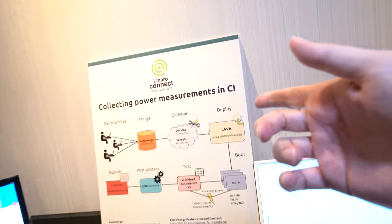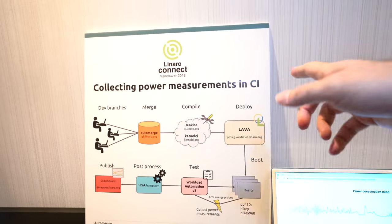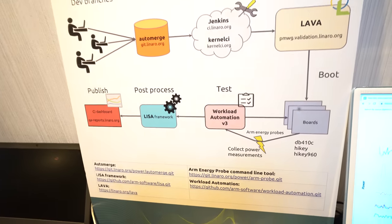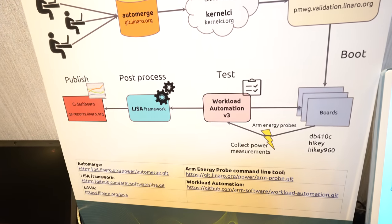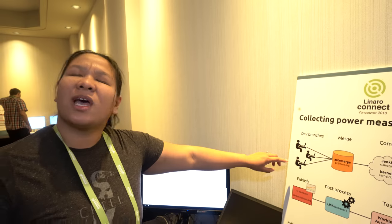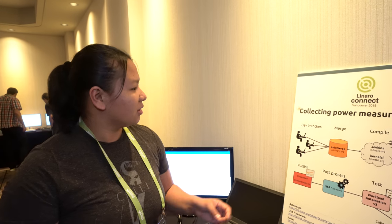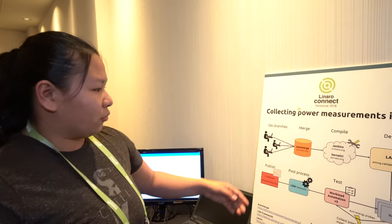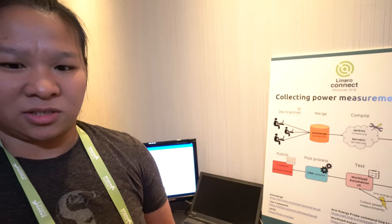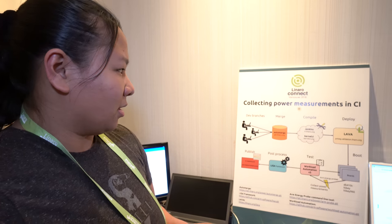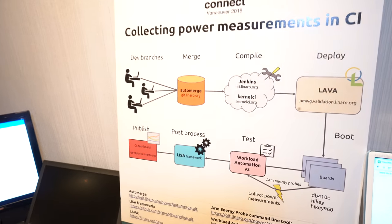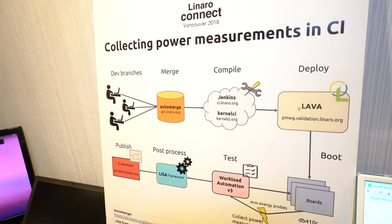Right here it says CI — continuous integration. What we do is that every developer in our team has their own branch and their own Git tree. We use a tool called AutoMerge, where it merges all the branches to a central repository, and then we trigger a build to create the Android build and the Linux build.